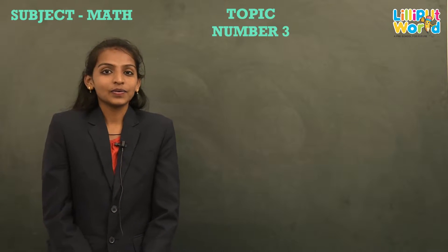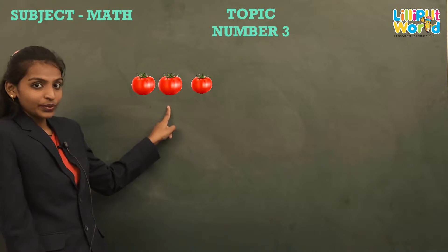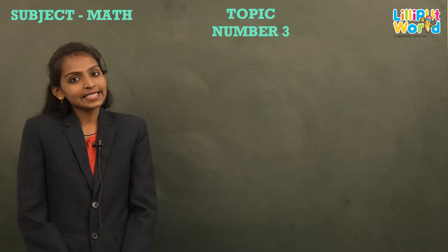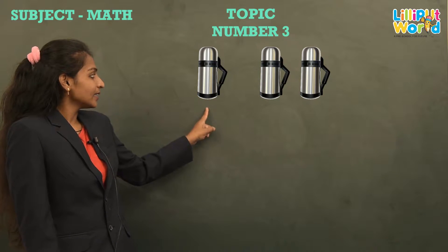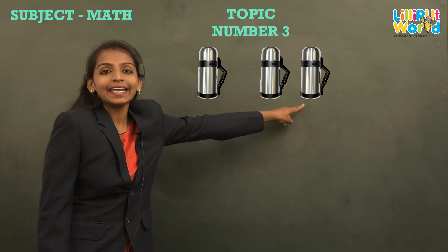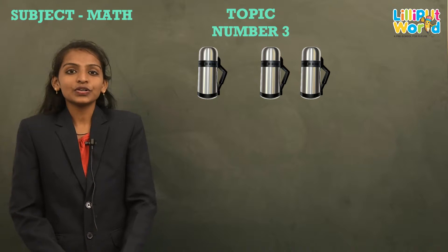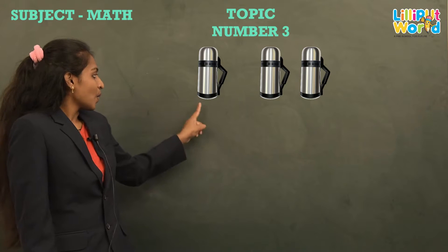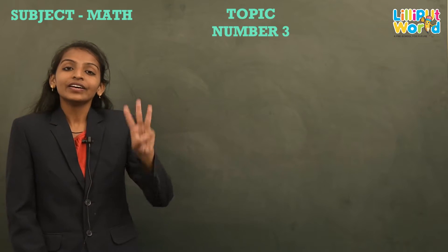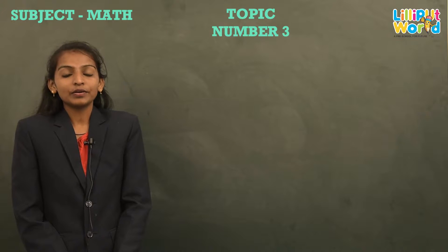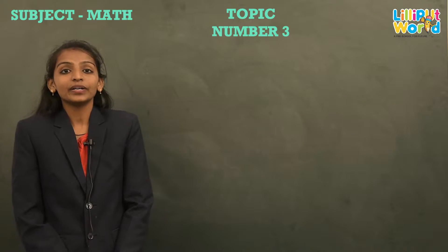Now let's learn more about number 3. See how many things are there — 1, 2, and 3. Now see here, count the things: 1, 2, and 3. So how many things are there? 3 things. One more time: 1, 2, and 3. How many things? 3 things. You have to count it properly.